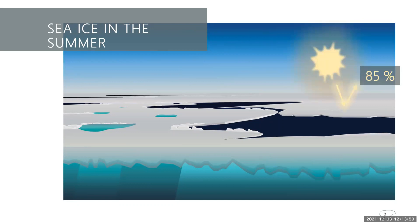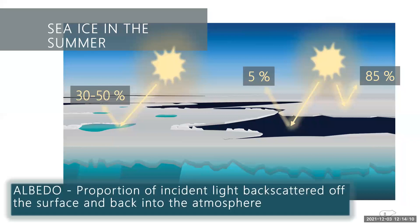So in the summer, solar radiation shining on the surface reflects different amounts based on each of them. So ice reflects about 85% of the incoming solar radiation. And open water only reflects 5% and then melt ponds can reflect between 30 and 50%. And these proportions are called albedo or the proportion of incident light back scattered off the surface and back into the atmosphere.